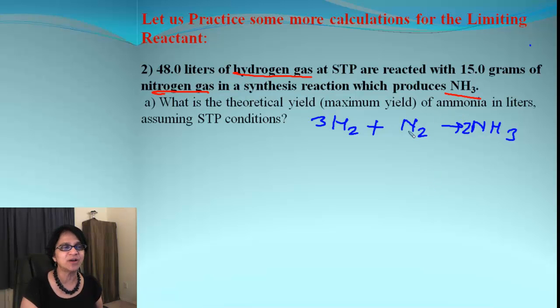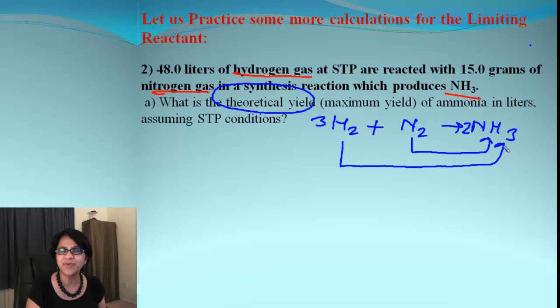Now in order for us to find out a limiting reactant and theoretical yield or maximum yield, what do we do? We take each of the reactants and take it to the products, and then find out which one gives you the smallest amount of product. And that will be the limiting reactant. So let's begin.